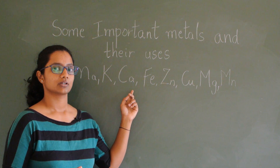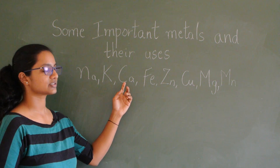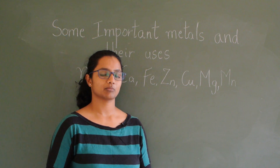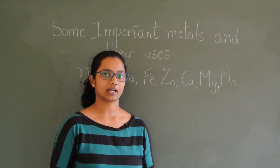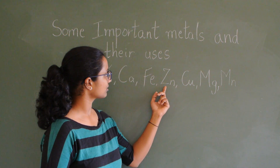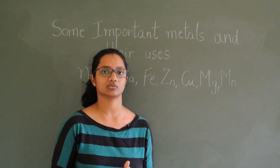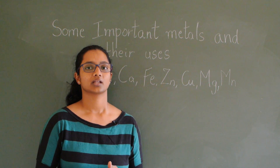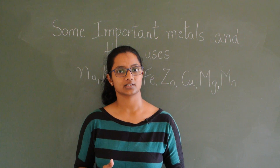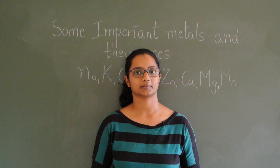Calcium is essential because our bones and teeth are made out of calcium. Iron in haemoglobin in red blood corpuscles is also very essential. Zinc, copper, magnesium, and manganese are also required by the body. There are certain metals that are very toxic and hazardous for our body, which will be studied in further classes.